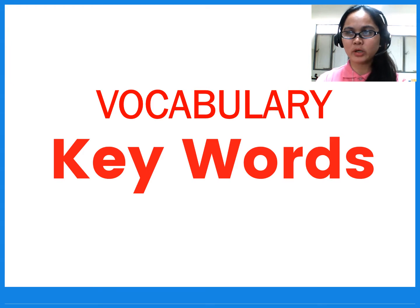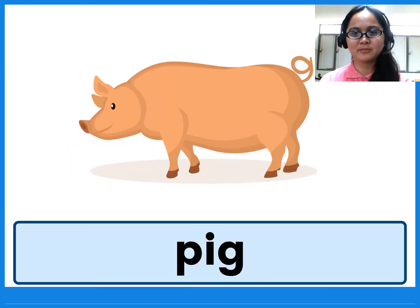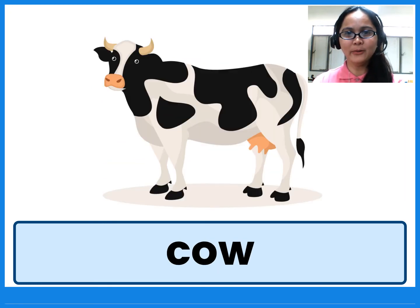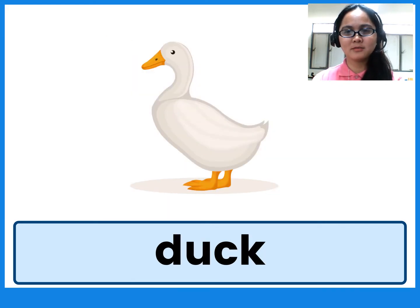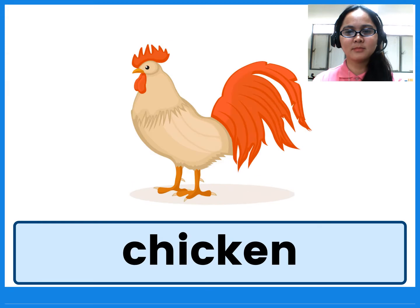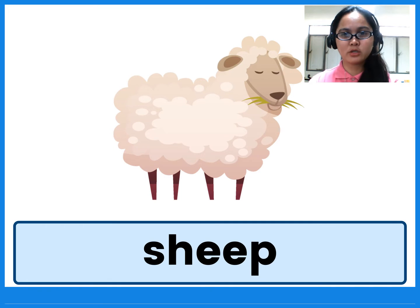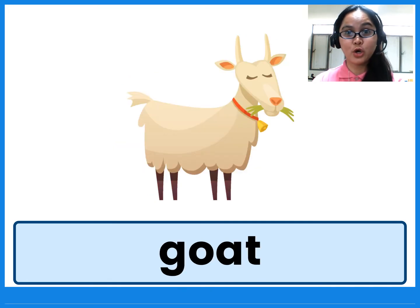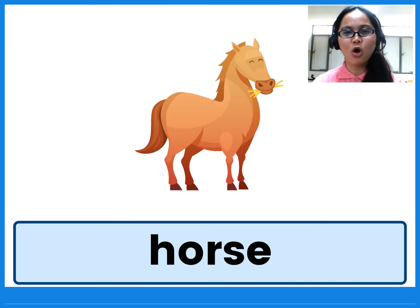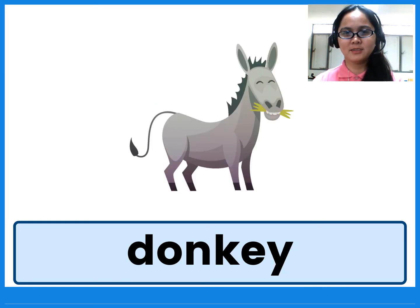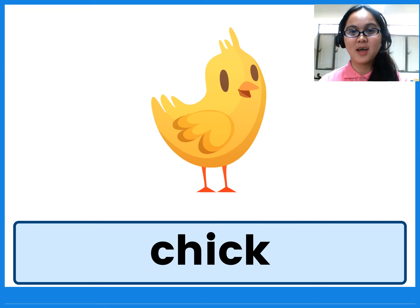We have our vocabulary words, or the keywords. Pig. Cow. Duck. Chicken. Sheep. Goat. Horse. Donkey. Chick.